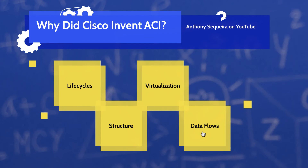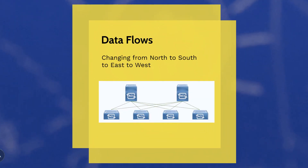Something else to consider is the overall data flow in the data center. It used to be that our designs emphasized a north-to-south data flow — we had a core layer, a distribution layer, and an access layer, with things flowing from north down to south and out of the data center. But now it's much more an east-to-west flow, as microservices are communicating with other nodes in an east-to-west fashion. This is one of the reasons why the Cisco ACI architecture shown on screen here is a very simple two-tier architecture that emphasizes the low-latency communications taking place from east to west in the data center.